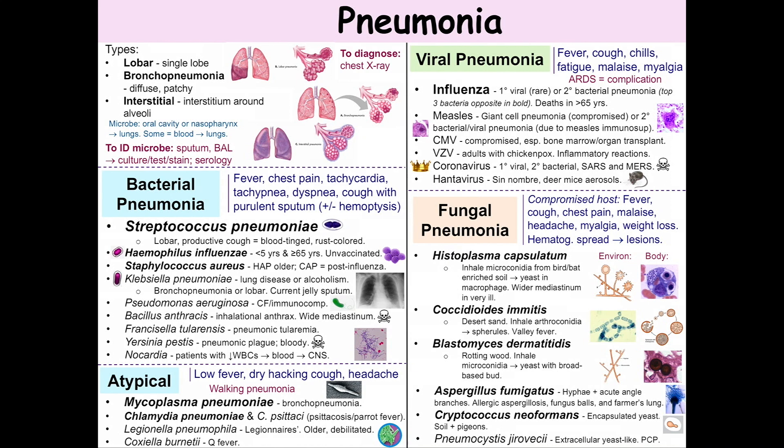The infectious agent usually comes in through the oral cavity or nasopharynx and infects the lungs. However, you can also have hematogenous spread from the blood to the lungs. To identify the microbe, usually sputum is used, but a bronchoalveolar lavage can also be used. The sample is cultured, tested, and gram-stained. Sometimes, though, serology has to be used if the organism cannot be grown or the lab is unable to do so.